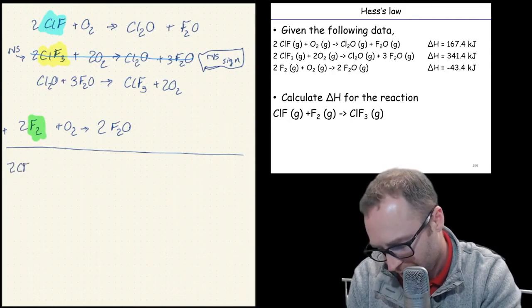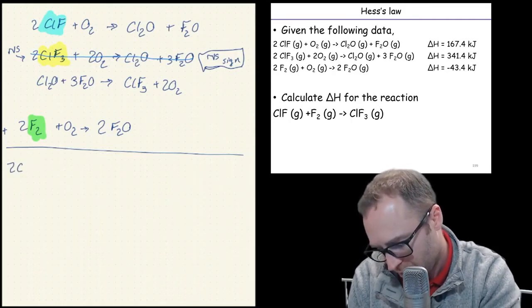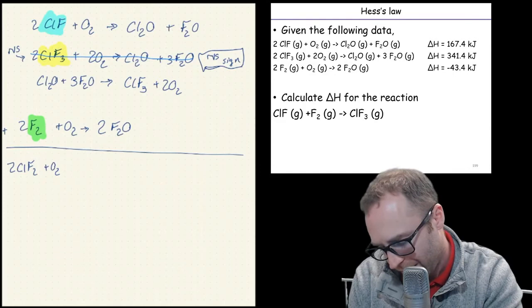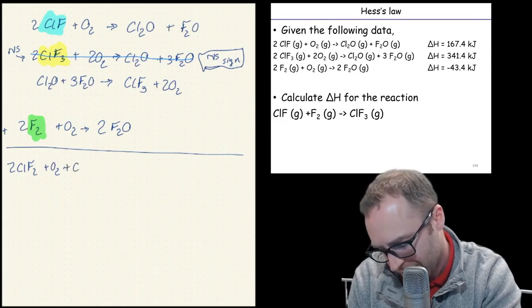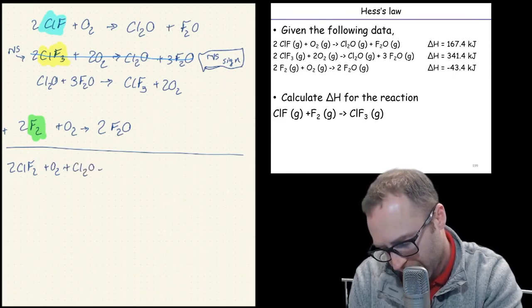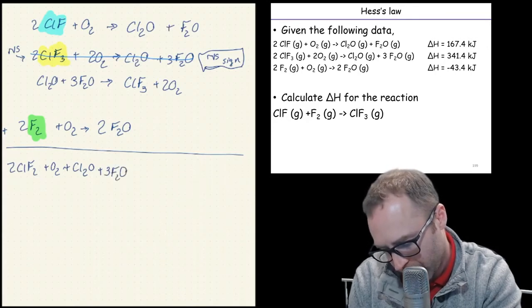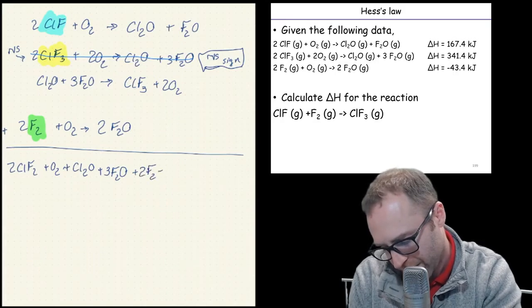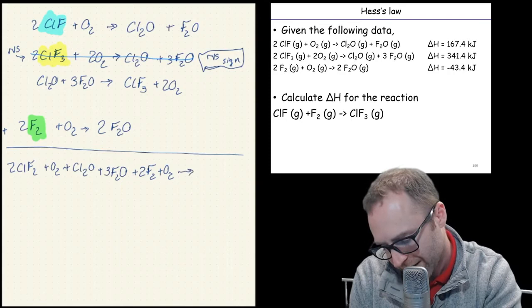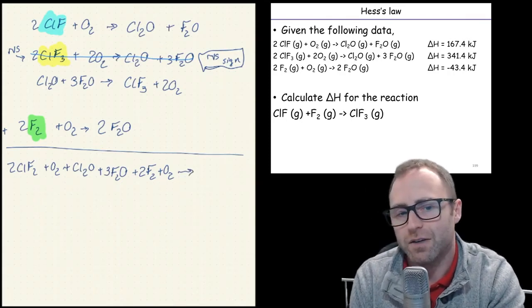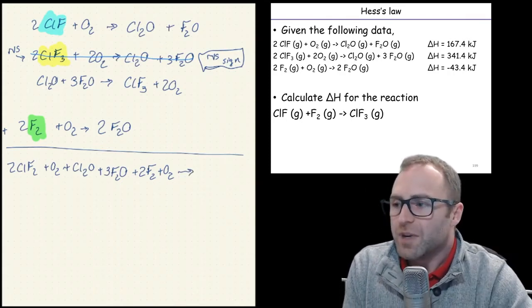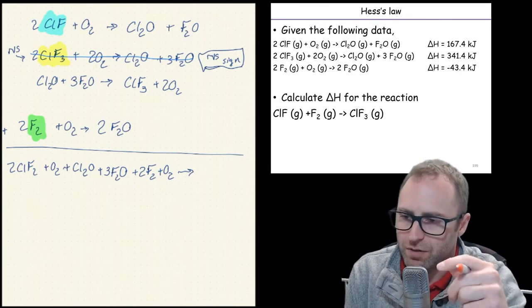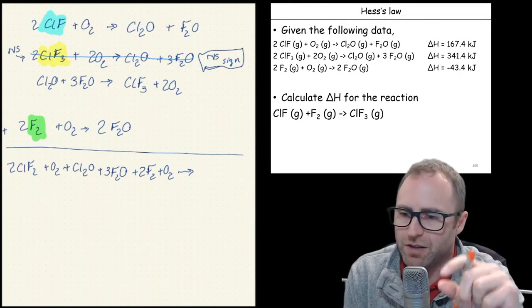So it's going to look a little something like this. So the 2 ClF plus O2 and then plus Cl2O plus 3 F2O plus 2 F2 plus O2 and that's everything that was a reactant.